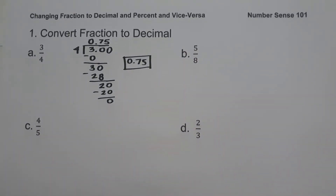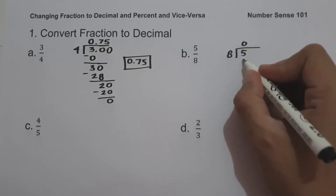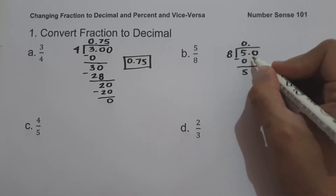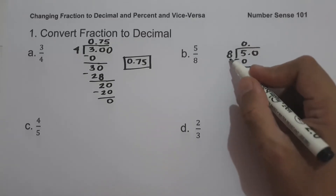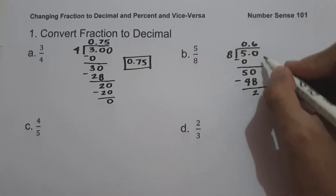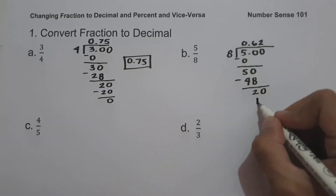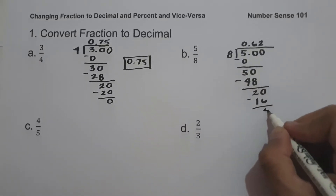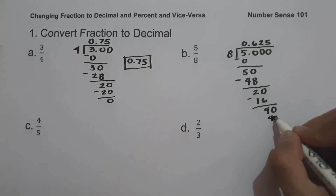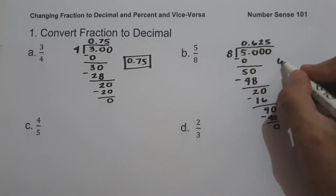On letter B, we have 5 over 8. So let us have 5 divided by 8. We add a decimal point and bring down 0. 50 divided by 8 is 6, and 6 times 8 is 48. 50 minus 48 is 2. Bring down another 0: 20 divided by 8 is 2, 2 times 8 is 16, 20 minus 16 is 4. Bring down another 0: 40 divided by 8 is 5, 5 times 8 is 40, 40 minus 40 is 0. So 5 over 8 in decimal is 0.625.